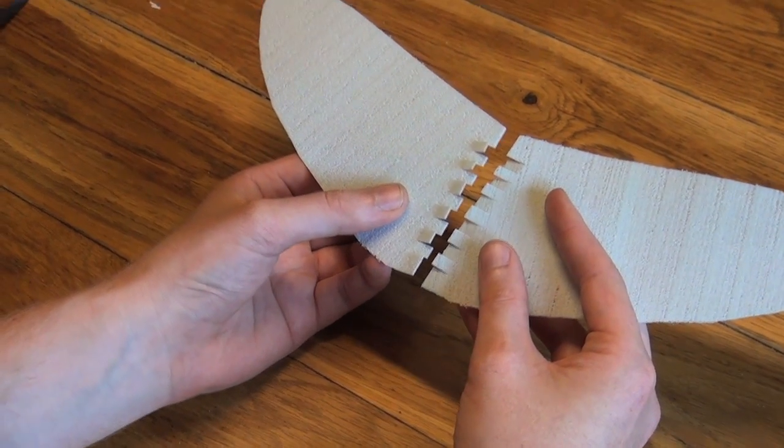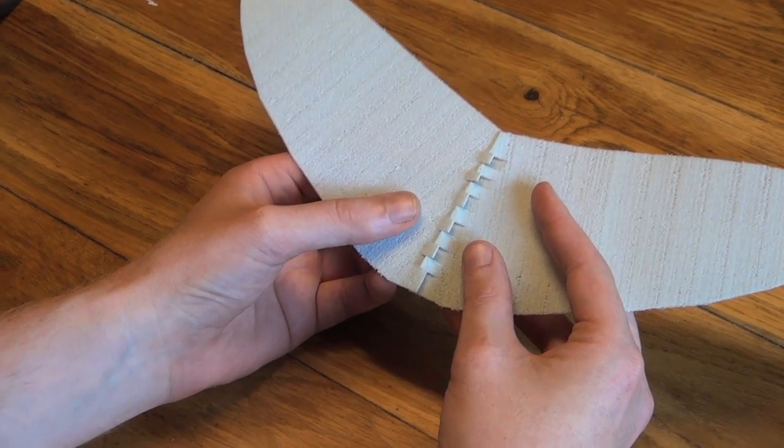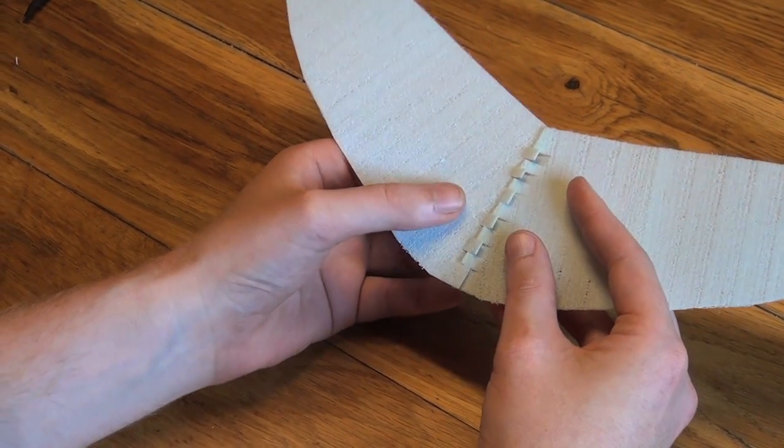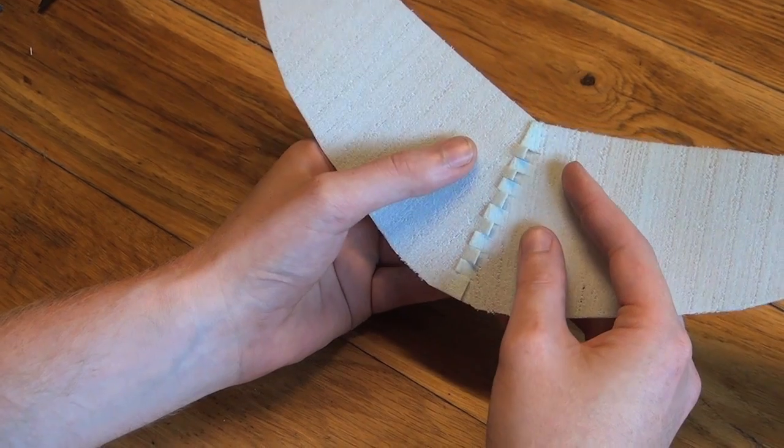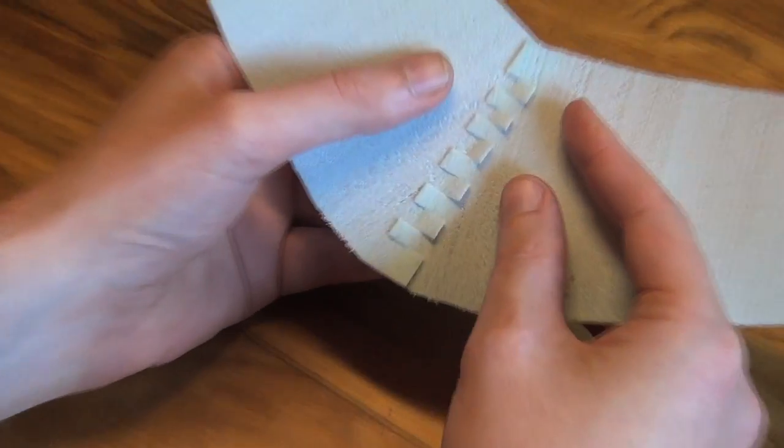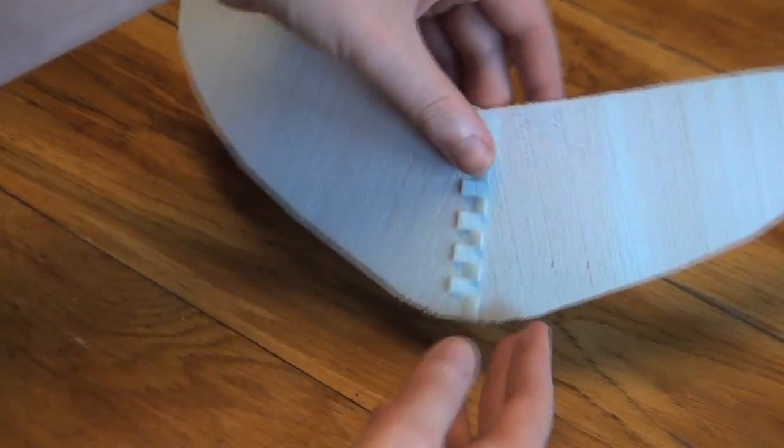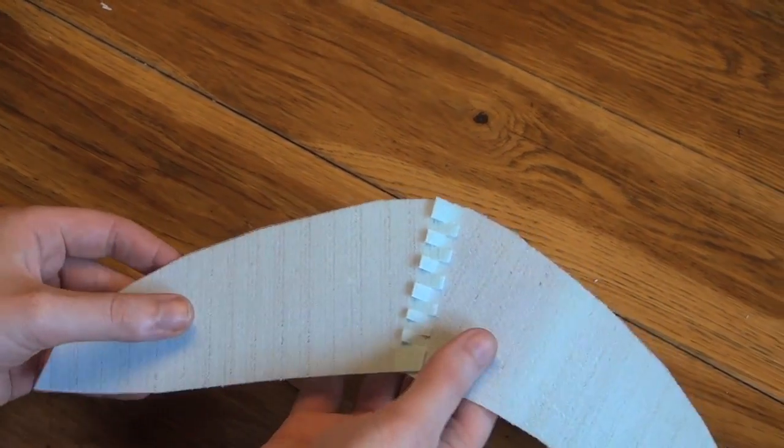Now we take our wing halves, we're going to very gently slip them together. Don't try to force this joint or you'll damage the foam. Just very gently push one end in and then the other. Keep alternating until the two wing halves are fully joined. Now it's together but we need to make a few more tabs in this middle joint to keep it from sliding apart easily.